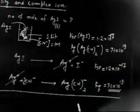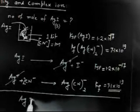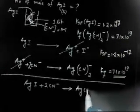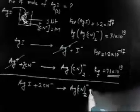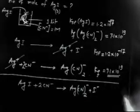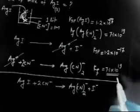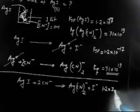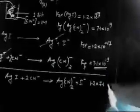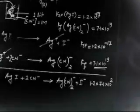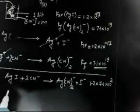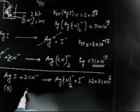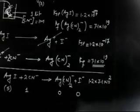When we add the two equations, Ag⁺ cancels out and we get: AgI(s) + 2CN⁻ → Ag(CN)₂⁻ + I⁻. The equilibrium constant for this combined reaction is Ksp × Kf = 1.2 × 7.1 × 10⁻¹⁷ × 10¹⁹ = 1.2 × 7.1 × 10² = approximately 8.52 × 10². AgI is solid; initial concentration of CN⁻ is 1 M, and initial concentrations of Ag(CN)₂⁻ and I⁻ are zero.